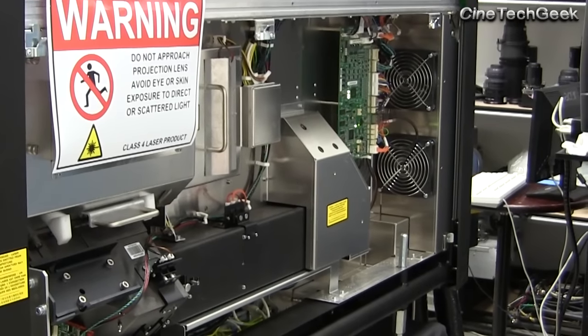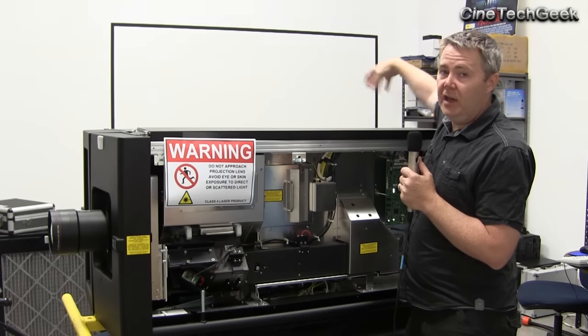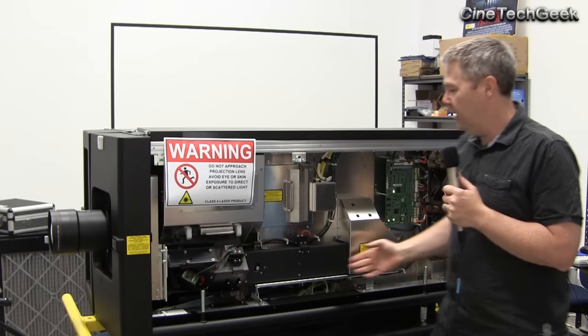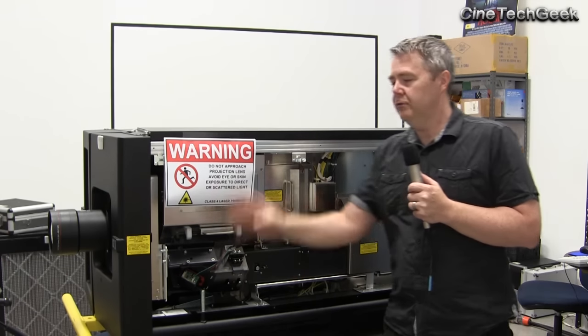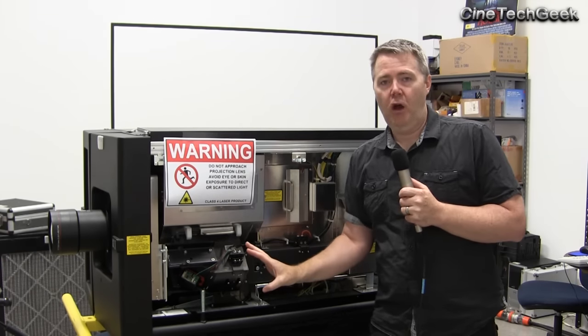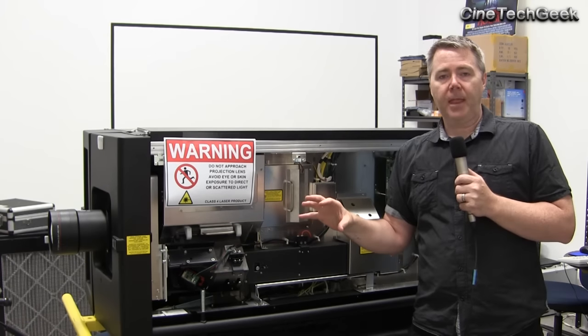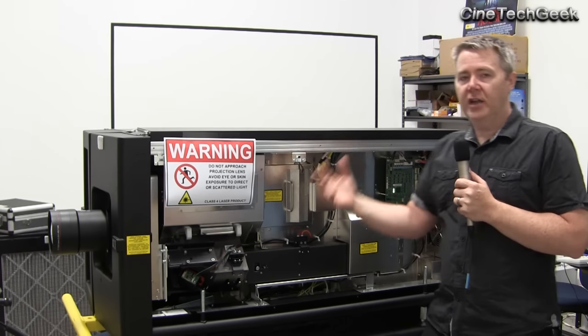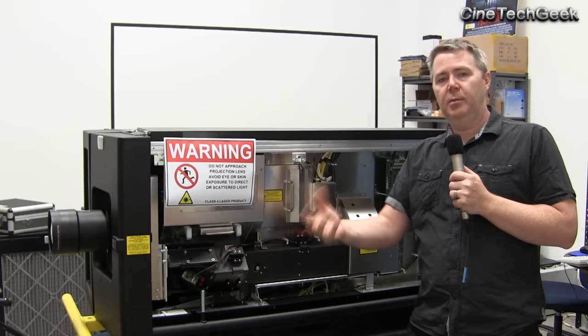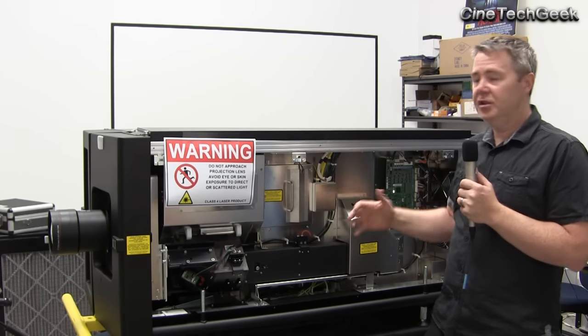Very modular with their 6 different laser modules going in here, coming into a combiner here. You've got an integrator rod and your traditional 4K light engine. It's nothing super science, but it's good to see one of the first implementations of a 6 primary engine and have a peek of how it all works.